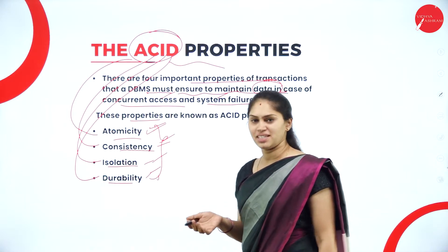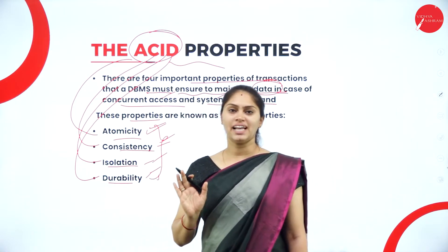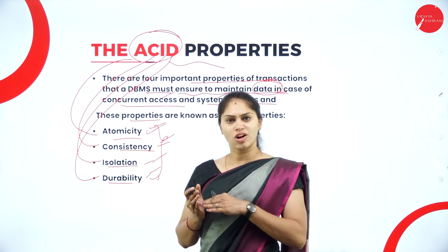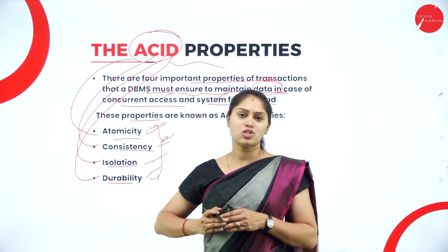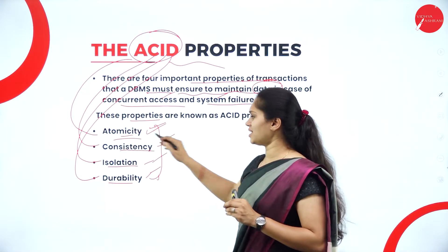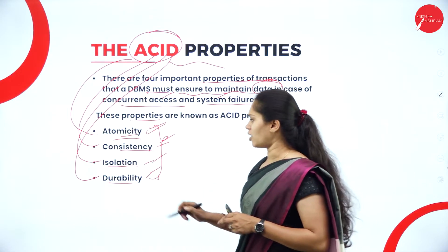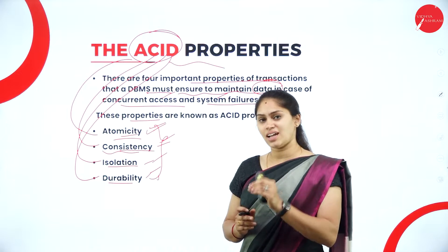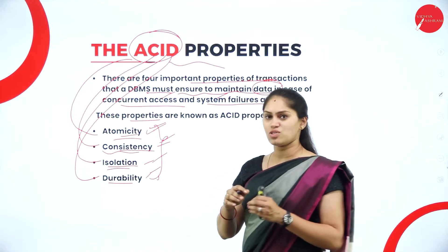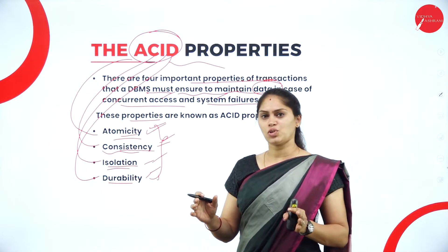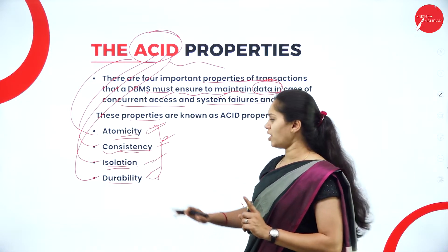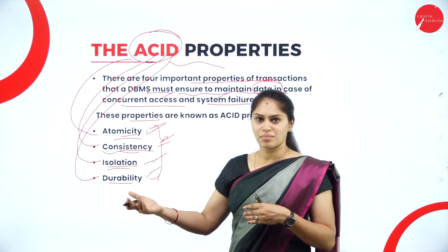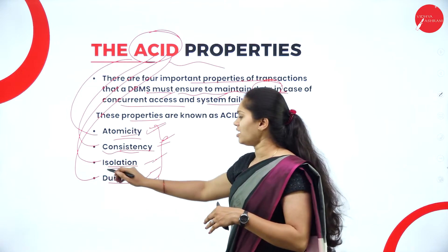Atomicity means a transaction should either be completely done or should not do anything — it should not get stuck in between. For example, if you send money to a friend's account, the amount must reach them or should not be initiated at all; it should not be stuck in between. Consistency means if changes such as commit or fail are happening, the DBMS must maintain a consistent state. Isolation means changes in T1 should not affect T2.